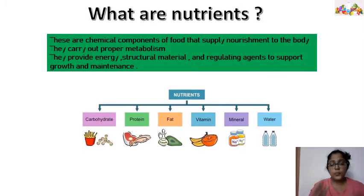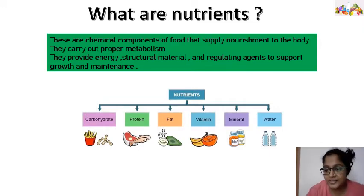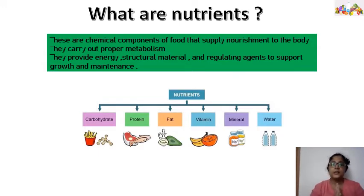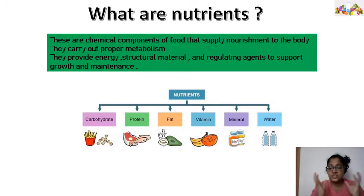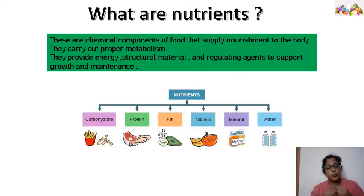Now, what are nutrients? We know that calcium is good for bone health and fat is also good for our health — good fats, of course, are good for health. These are nutrients. Nutrients are basically the chemical components which give us all the necessary things required by our body to support growth and maintenance, to provide energy, to construct ourselves, to produce something in our body, to carry out proper metabolism, and to give complete nourishment to our body. So these chemical components of food are known as nutrients, and when we are taking food, we are getting the nutrients for all the functions of our body.